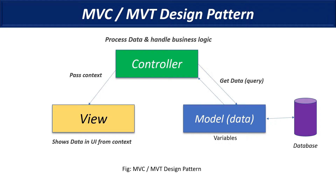The view doesn't need to know anything about what the model is doing, because the model is your variables connected to the database. It's a very good modular system — the view just connects and talks with the controller, taking all the processed information and showing it in your HTML format document, or a Blade template, or any template engine you use. The view simply shows the information the controller passes to it via context.